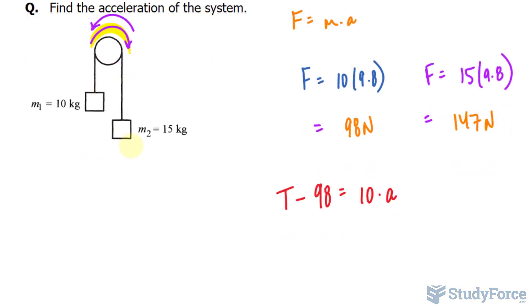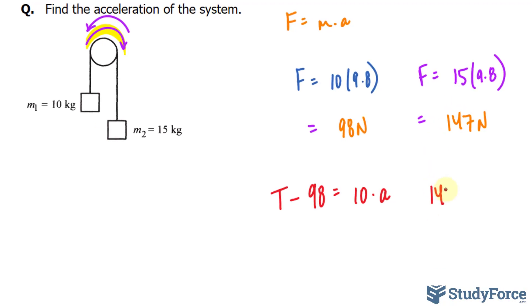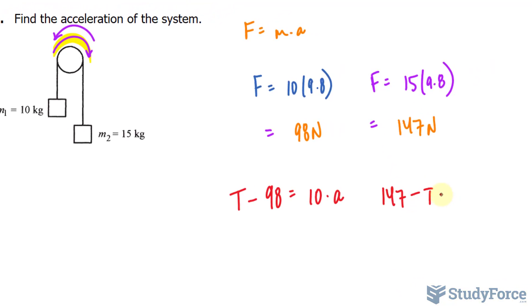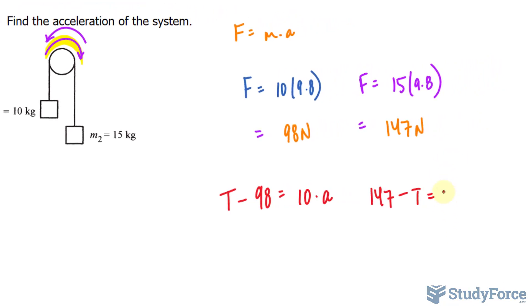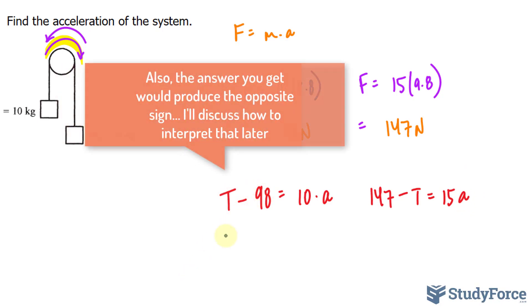And similarly, for the other mass, we can say that it is 147 minus the tension is equal to 15 times A. Now had I assumed that it was counterclockwise, this would be 98 minus T, and this would be T minus 147.